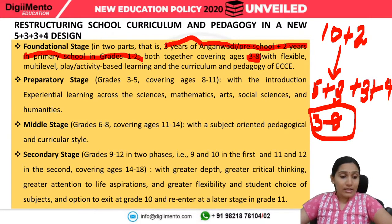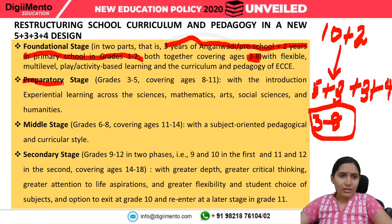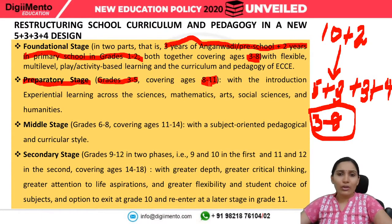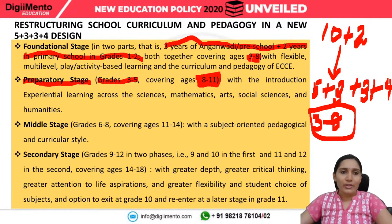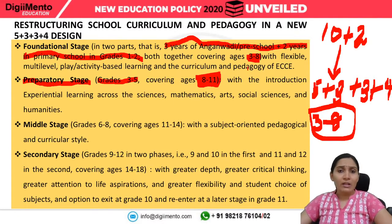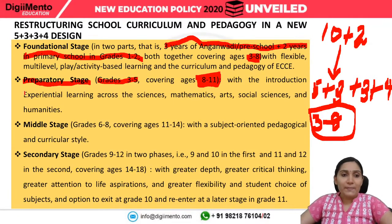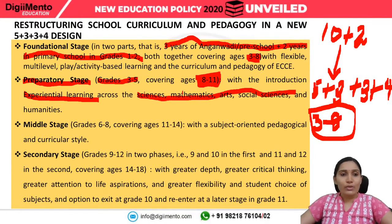The preparatory stage covers grades 3 to 5, ages 8 to 11. Please note all these points — they are very important, especially for your NET examination. At this stage, the introduction of experiential learning across sciences, mathematics, art, social sciences, and humanities will be done.